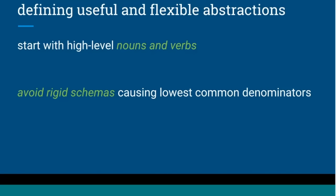One of the hardest parts with designing this type of system is figuring out the right level of abstraction. The approach we took was to start with very high-level nouns and verbs — at a broad level, what you would want to do with these different resource types — and go from there to figuring out what entities we need to define. Most importantly, we really wanted to focus on avoiding rigid schemas that create generalizations or lowest common denominators.